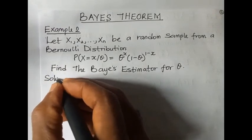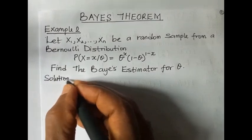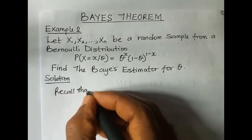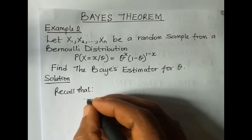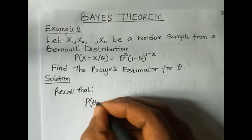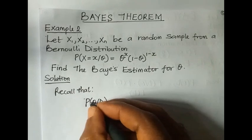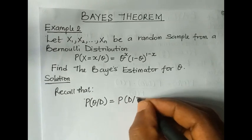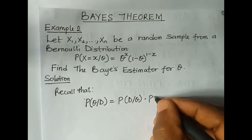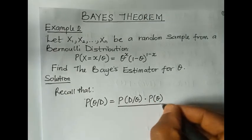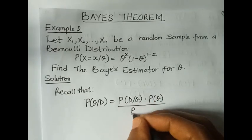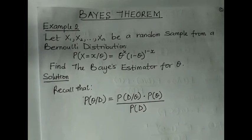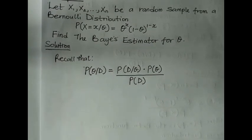For the solution, we recall that the probability of the posterior distribution is equal to the probability of the likelihood function multiplied by the prior distribution of theta, all over the marginal likelihood function.